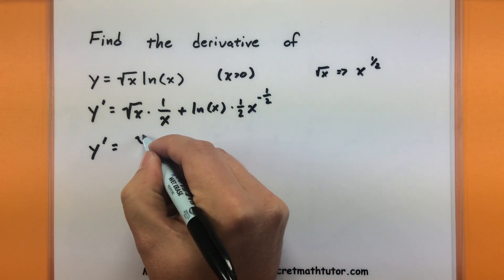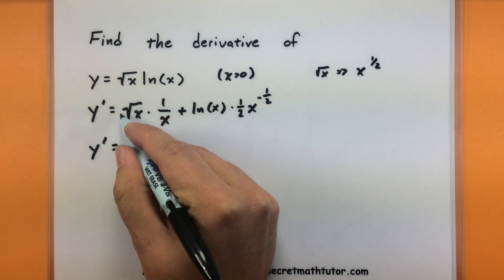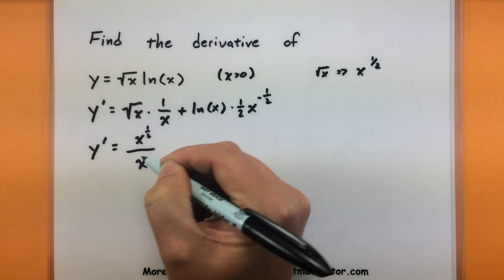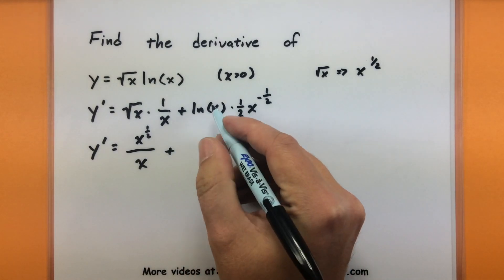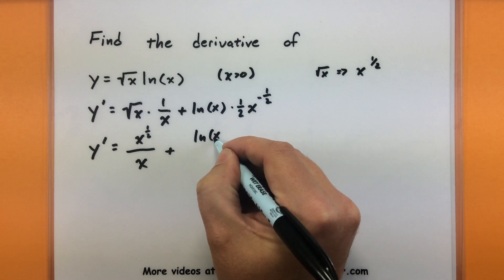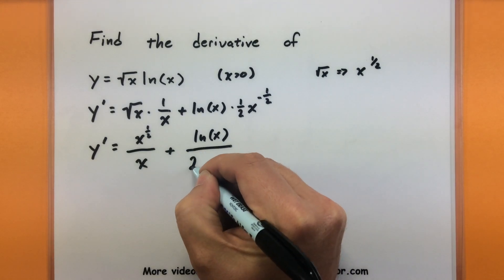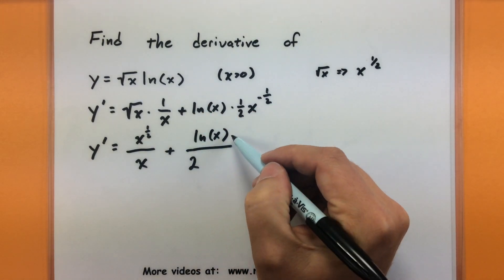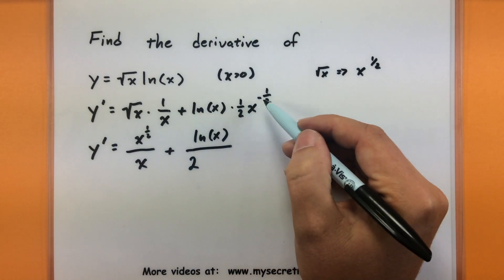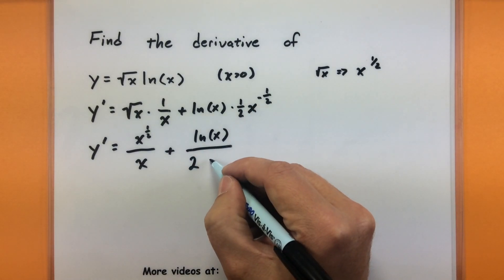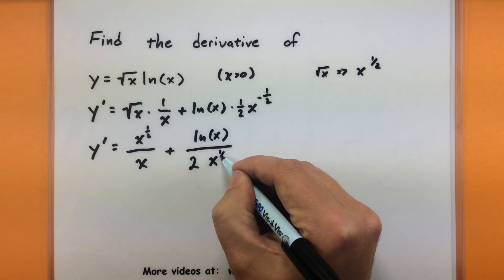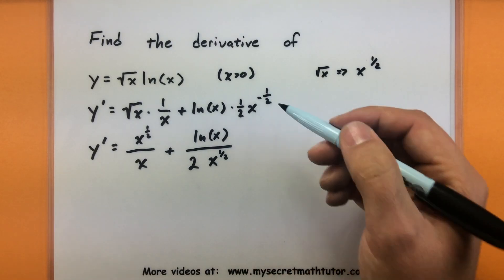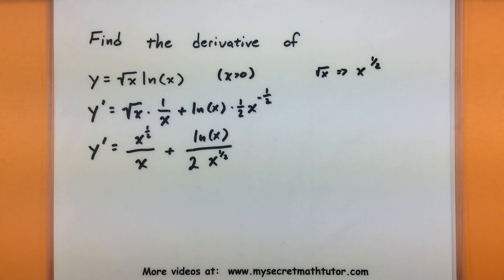So it looks like we have x to the 1 half, that's from the square root, all divided by x, plus, and then I have a natural log of x, all over 2, so there's my natural log on top. The 2 on the bottom is coming from that 1 half, and this is in the bottom as well, since this is to a negative power. So that all looks good.